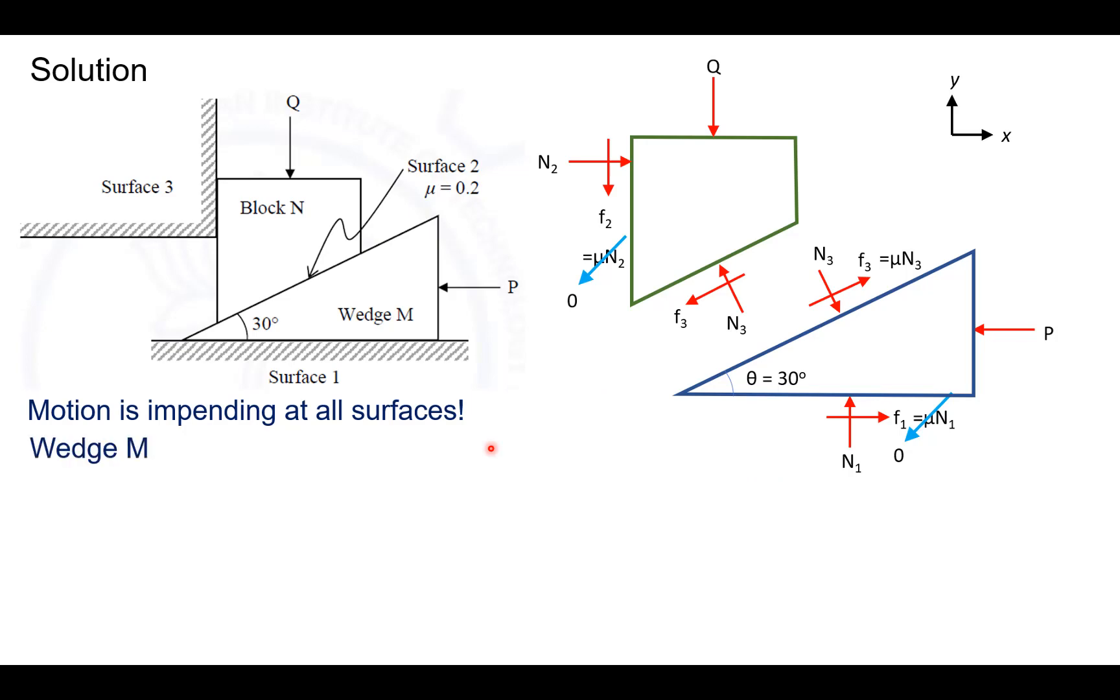Now, if we were to consider the wedge M and apply the equilibrium condition sigma Fx equaling 0, we can see that this would give us N3 sin 30 plus mu N3 cos 30 minus P equaling 0. And we can solve this to get N3 equaling P divided by sin 30 plus 0.2 cos 30.